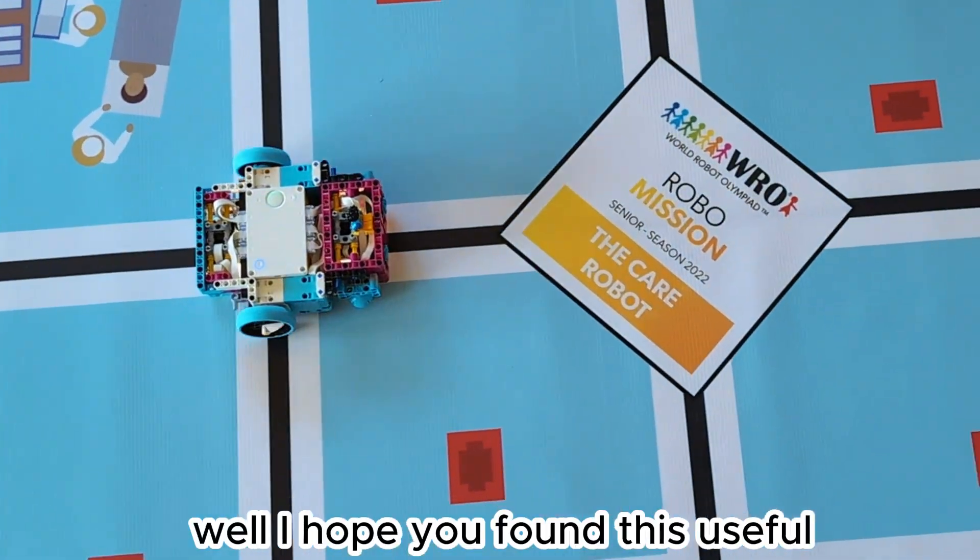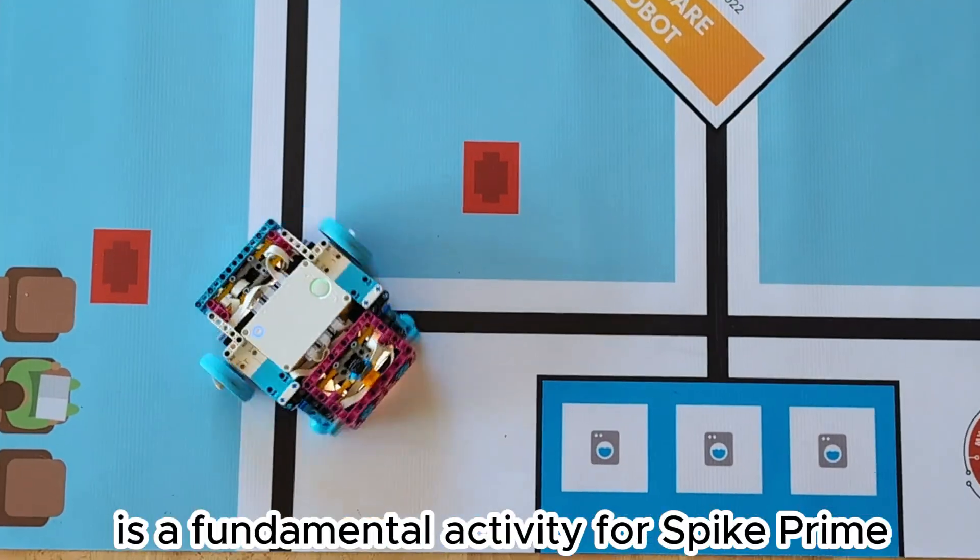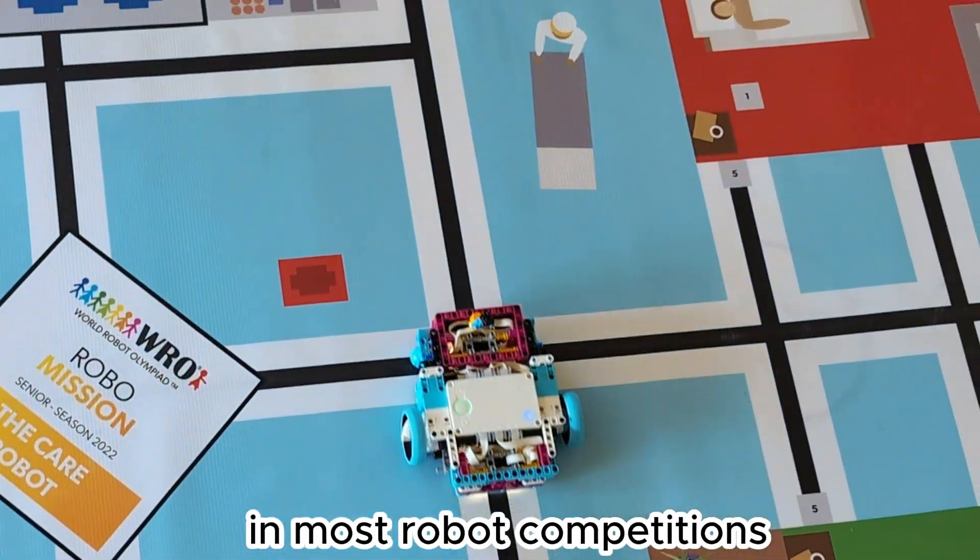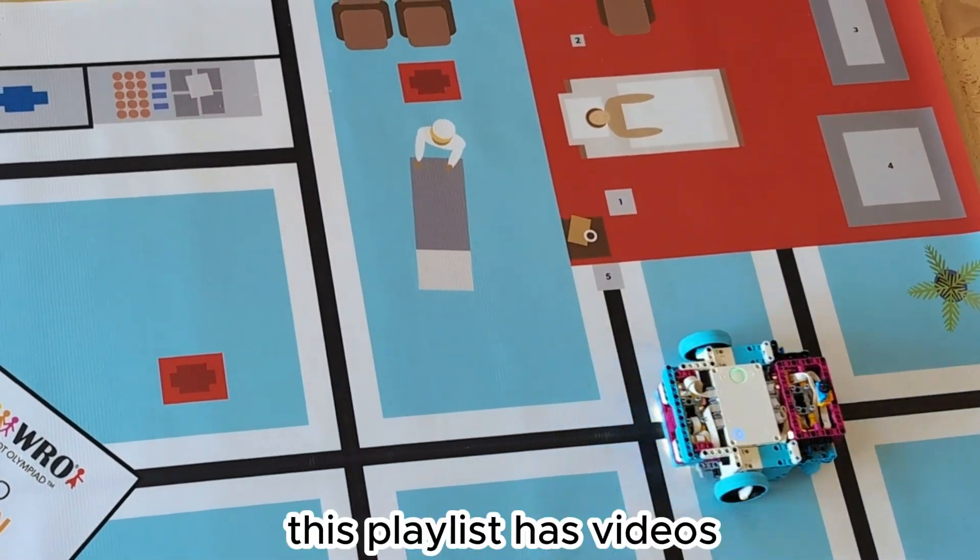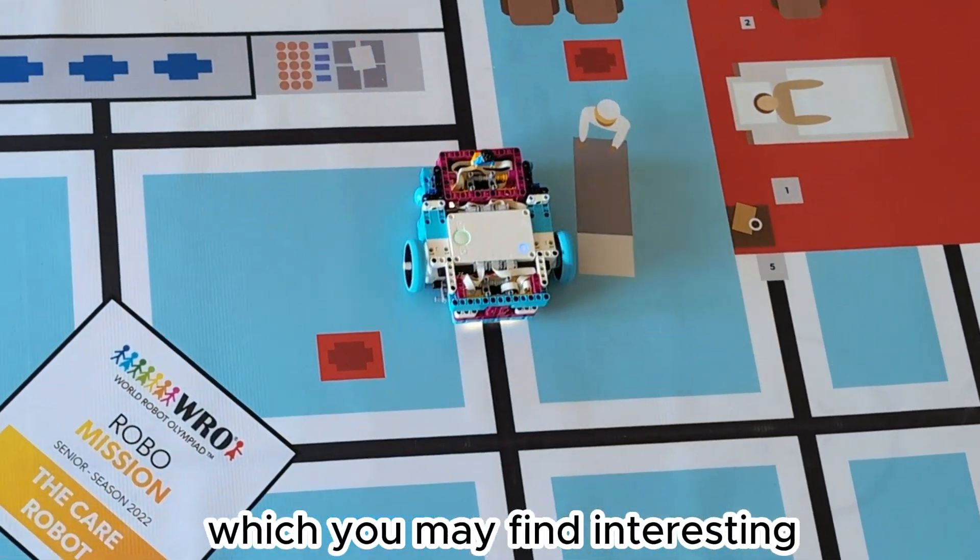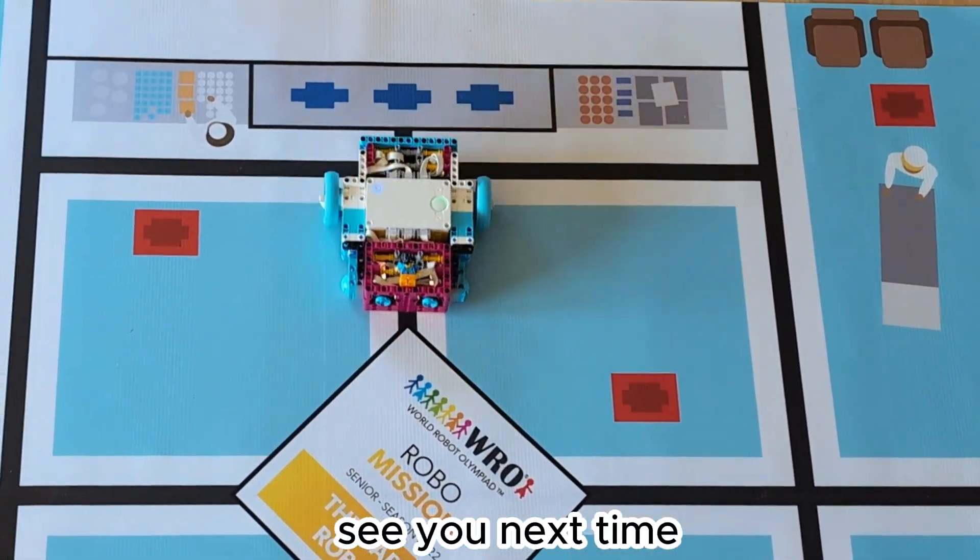Well I hope you found this useful. Line following is a fundamental activity for SPIKE Prime and is a requirement in most robot competitions. This playlist has videos covering other topics which you may find interesting. Please like and subscribe. See you next time.